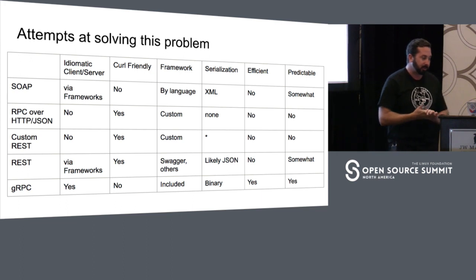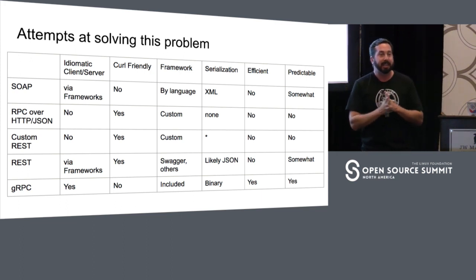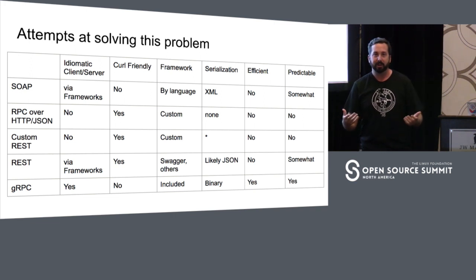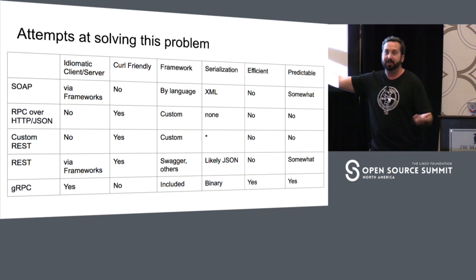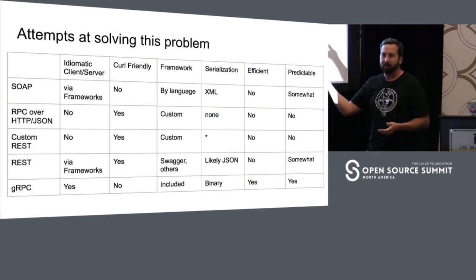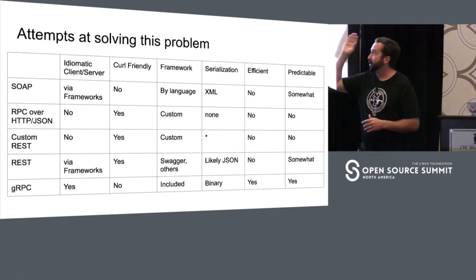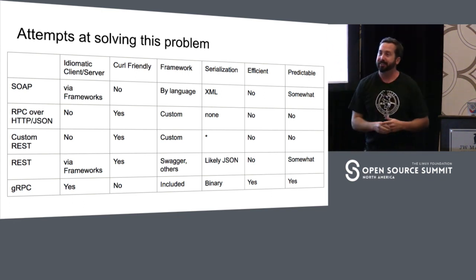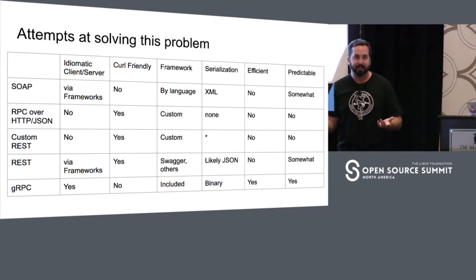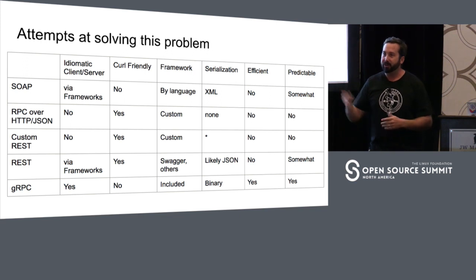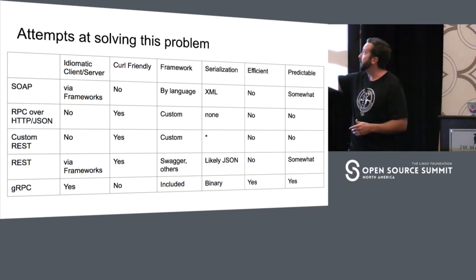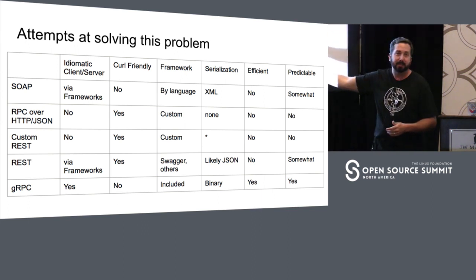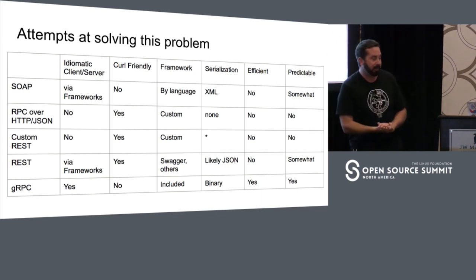The very bottom is where we get to gRPC. The stubs and bindings for gRPC are all generated by the gRPC project, so as the gRPC standard for protobuf is maintained and moved forward, your bindings at the language level are all put out in sync. gRPC is not curl-friendly — they have their own tools for troubleshooting — but if the trade-off is curl-friendly versus super efficient, efficiency probably wins. Serialization is binary — super efficient — and it's predictable because everything is generated for you.